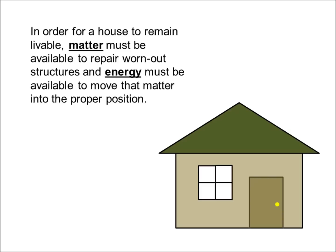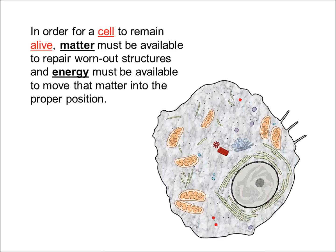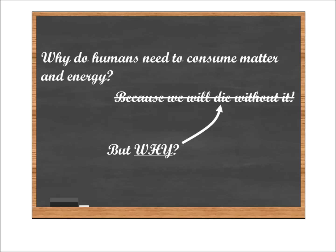So in order for a house to remain livable, matter must be available to repair worn-out structure, and energy must be available to move that matter into the proper position. Now, I want you to think about two words in this sentence — the words 'house' and 'livable' — and change them to 'cell' and 'alive.' In order for a cell to remain alive, matter must be available to repair worn-out structures, and energy must be available to move that matter into the proper position.